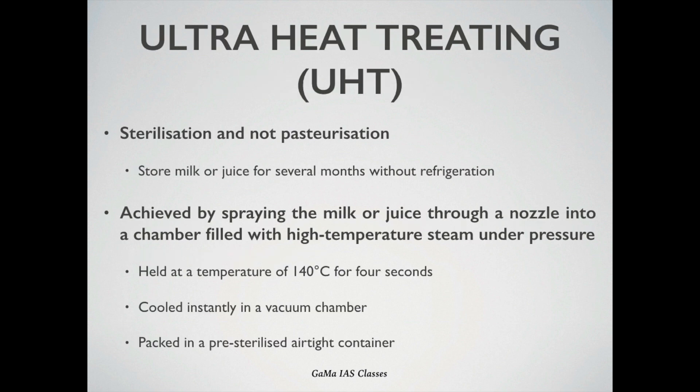In the Ultra Heat Treating, or UHT method, mainly sterilization is done and not pasteurization. This enables storing milk or juice for several months without refrigeration. It is achieved by spraying the milk or juice through a nozzle into a chamber filled with high temperature steam under pressure. The temperature is held at 140 degrees Celsius for 4 seconds and then it is cooled instantly in a vacuum chamber. Subsequently, the food is packed in pre-sterilized airtight containers.